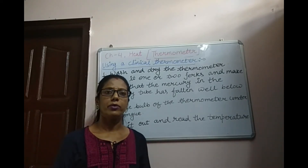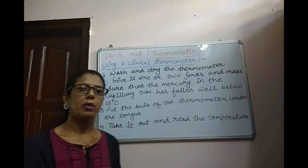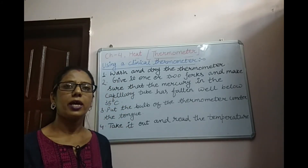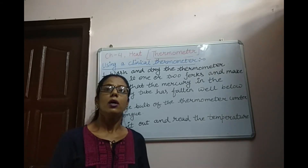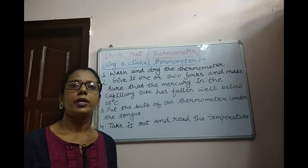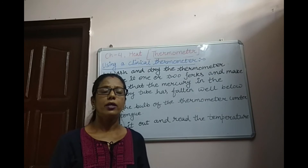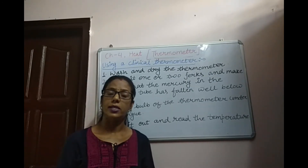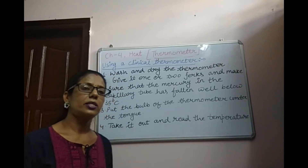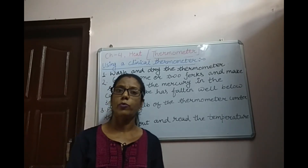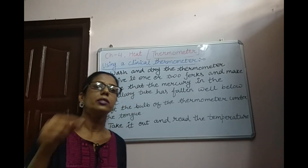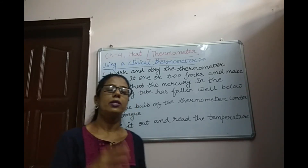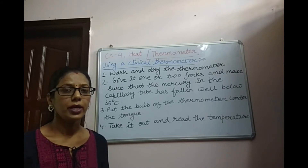The range of the Clinical Thermometer is 35 degree Celsius to 42 degree Celsius, and on the Fahrenheit scale, that is 94 degree Fahrenheit to 108 degree Fahrenheit. The normal human body temperature is 37 degree Celsius, which is the average taken over a large number of healthy persons.